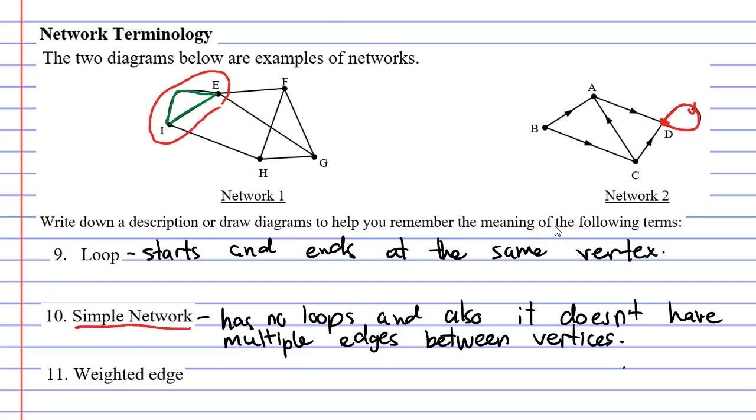So what would a simple network look like? Well let's just draw three vertices call them A, B and C and we'll just connect them like so. This is a simple network because it doesn't have any loops and it doesn't have multiple edges between vertices.